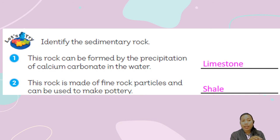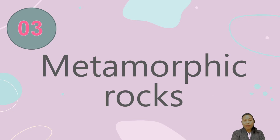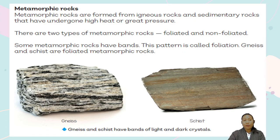So we've covered two types of rocks. The last one is metamorphic rocks. Metamorphic rocks are rocks formed from igneous rocks and sedimentary rocks that have undergone high heat or great pressure. There are two types: foliated and non-foliated. Some metamorphic rocks have bands — this pattern is called foliation. Gneiss and schist are foliated metamorphic rocks.